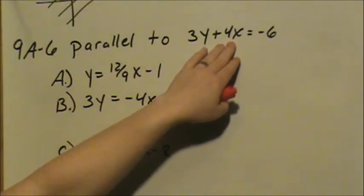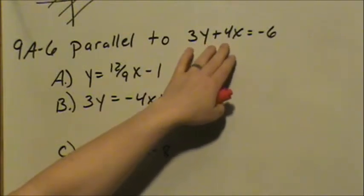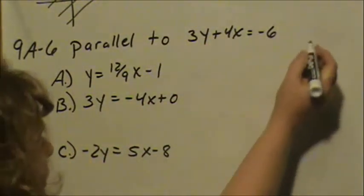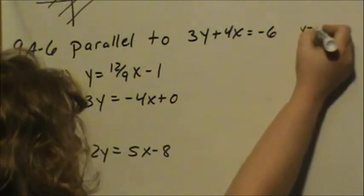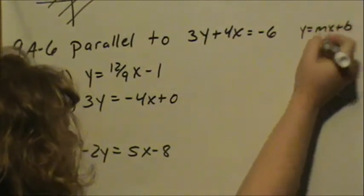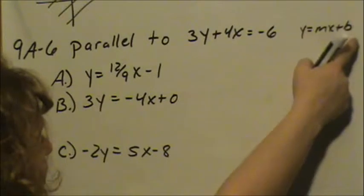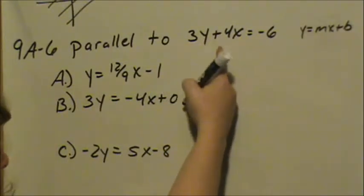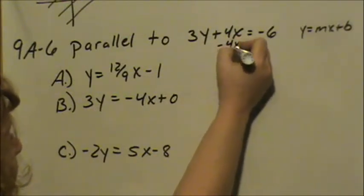For more detailed problems of how to change it back and forth from slope-intercept to standard, see the videos on that. Right now, this is in standard form and it needs to be in slope-intercept form. Slope-intercept form is in the form of y equals mx plus b, which means y is on one side, everything else is on the other side. We need to get y on one side and everything else on the other side, which means we need to move our 4x over.